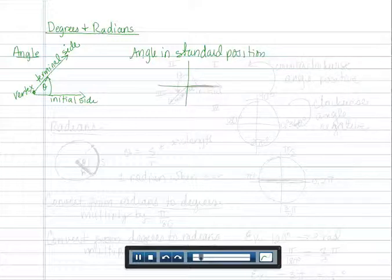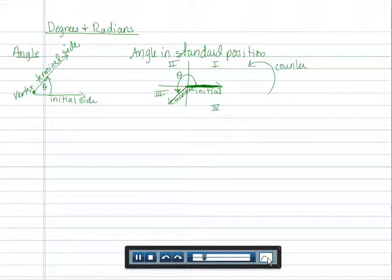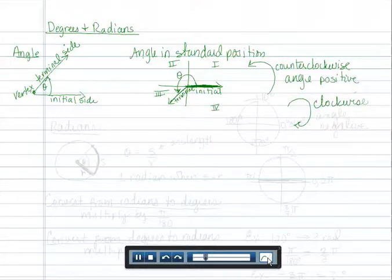When we talk about angles being in standard position, we reference the x and y axis and like for our initial side to be on the x-axis. The angle can end anywhere—in the first quadrant, second, third, or fourth. The angle is measured from the initial side all the way to the terminal side. If you go counterclockwise, the angle is positive, and if you go clockwise, the angle will be negative.